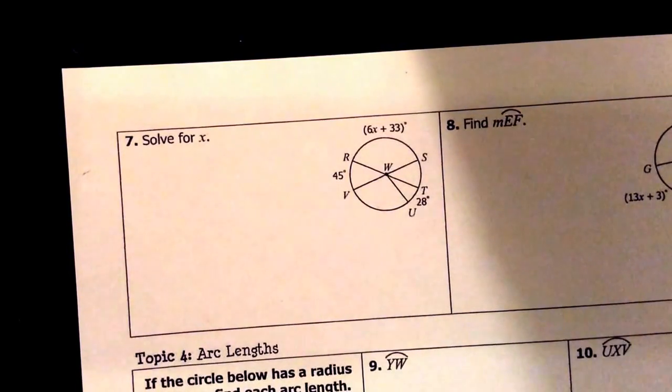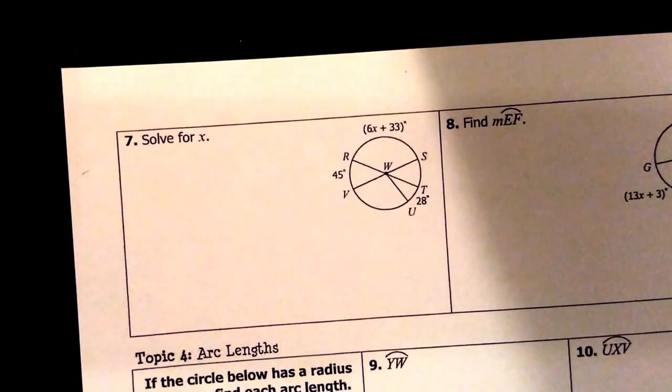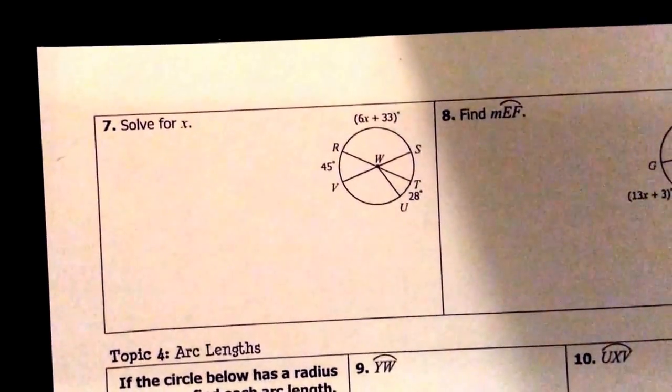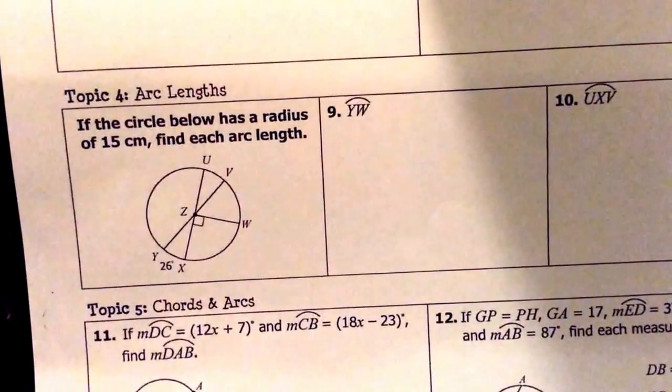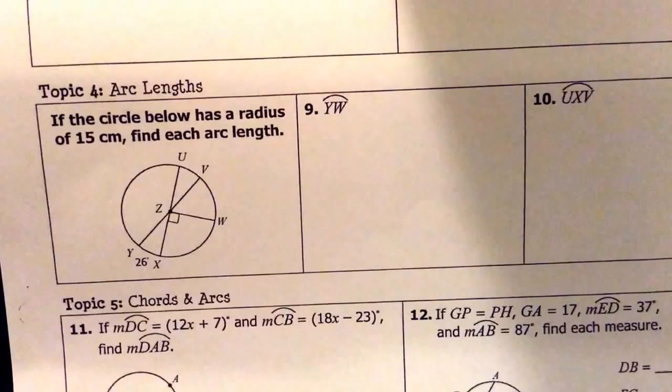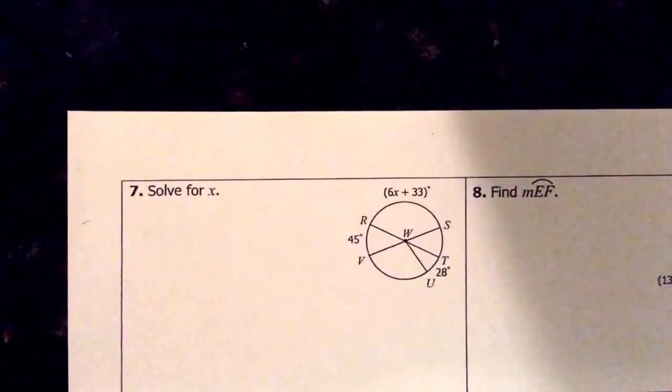On the second page of our circle review we are going to continue talking about arcs and arc lengths. The next section will be chords and arcs and at the bottom of the page we're going to discuss some inscribed angles. So let's look at question number seven.